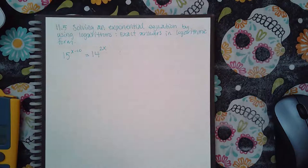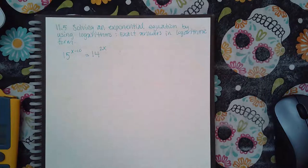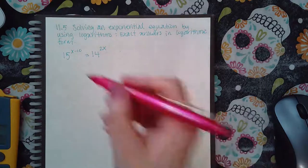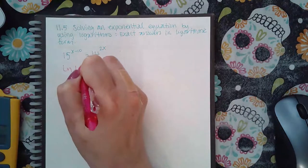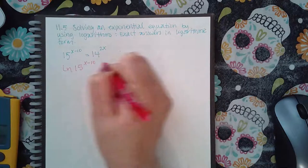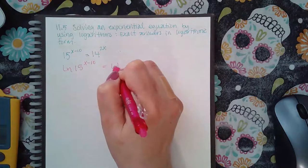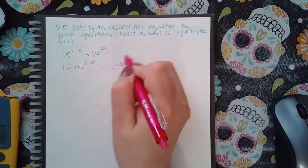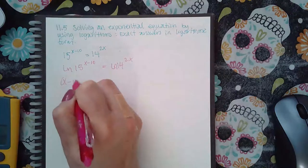So here it's solving an exponential equation by using logarithms and exact answers in log form. If I do the ln on both sides, I get—bring down the exponents—I get this.